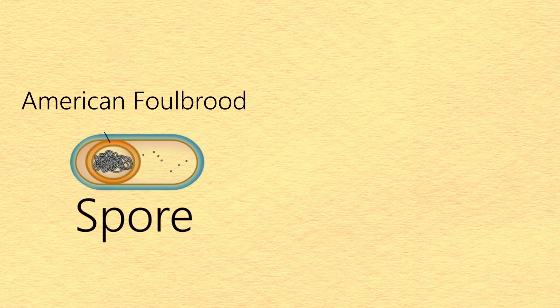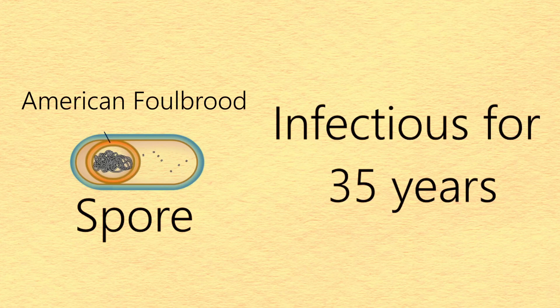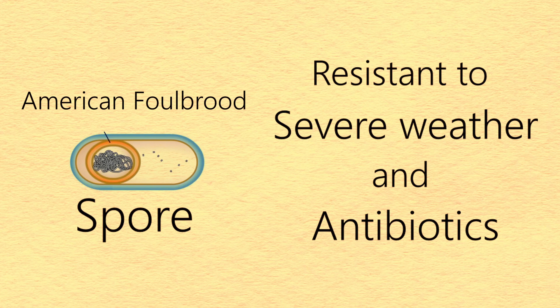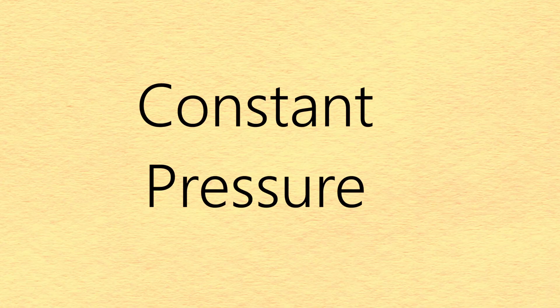Here is the danger of American Foulbrood. The spores remain infectious for more than 35 years, withstanding severe weather and drought, and they are resistant to antibiotics. This kind of organism is a constant pressure to beekeeping operations because we know they're just there all the time, waiting for the right opportunity to cause damage.